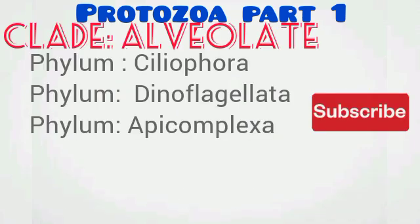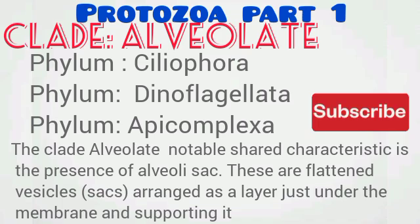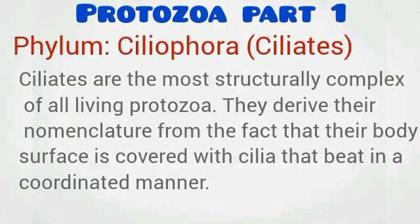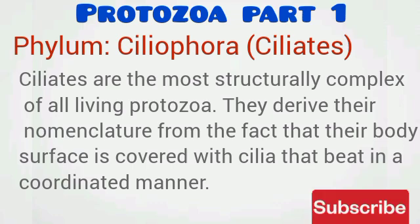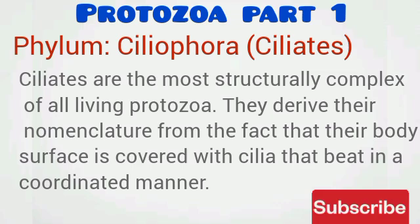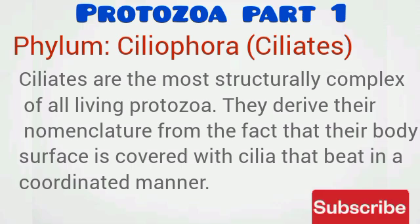We'll be discussing the clade Alveolata, under which Ciliophora, Dinoflagellata, and Apicomplexa are placed. Ciliophora are commonly called ciliates. Ciliates are the most structurally complex of all living protozoa. They derive their name from the fact that their body surface is covered with cilia that beat in a coordinated manner.